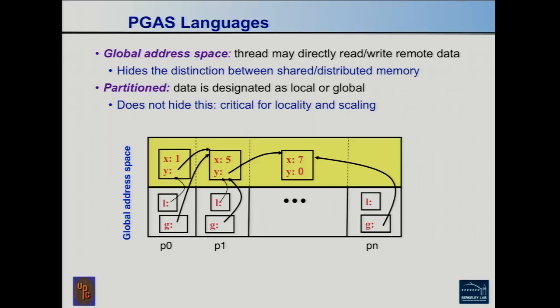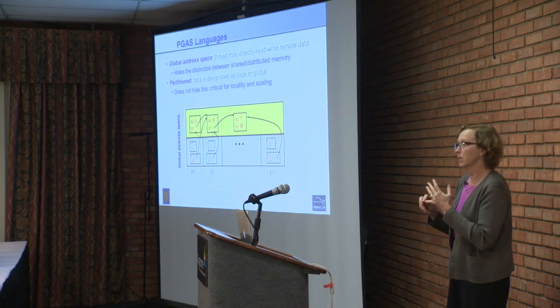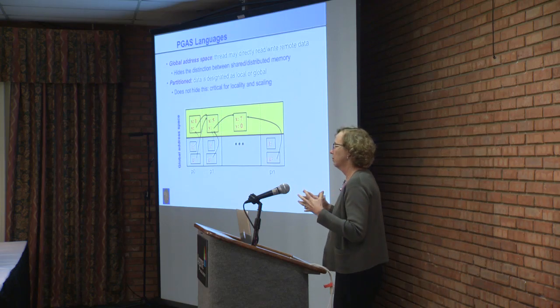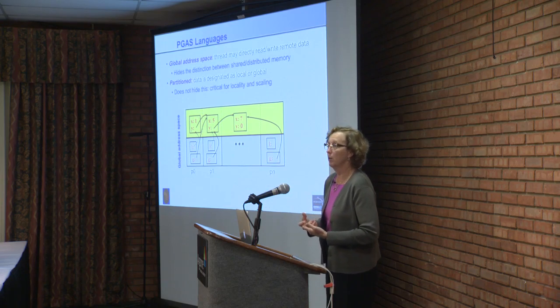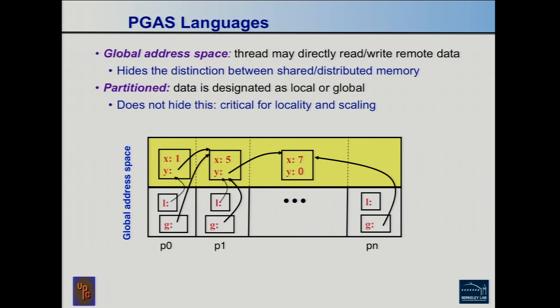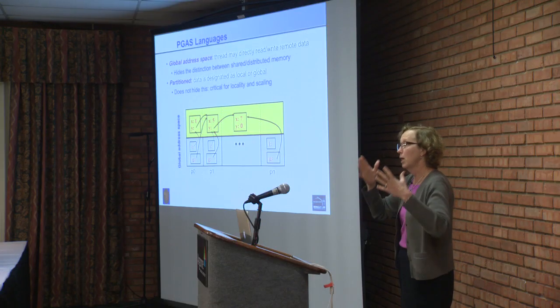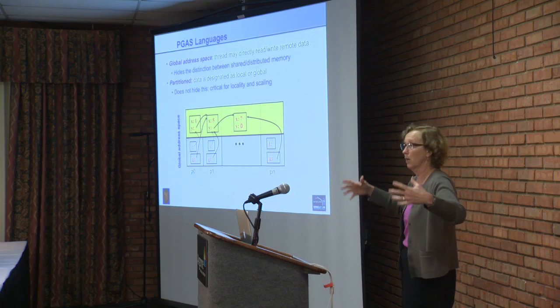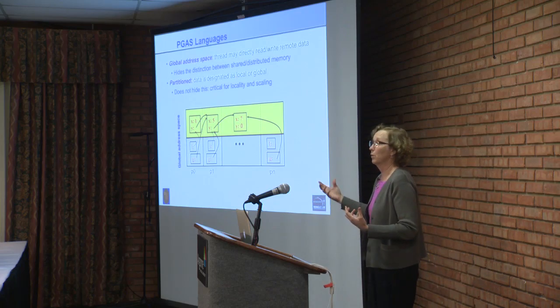Here's a picture of what a PGAS language looks like. What makes a PGAS language? First of all, it has to have a global address space. We use that term rather than shared address space or shared memory, because with shared memory you think of a cache coherent shared memory multiprocessor. A global address space says that you can access anything anywhere, but doesn't say anything about how fast it will be. The partitioned characteristic of PGAS, as opposed to just a global address space or shared memory, is that data is designated as being local or global.